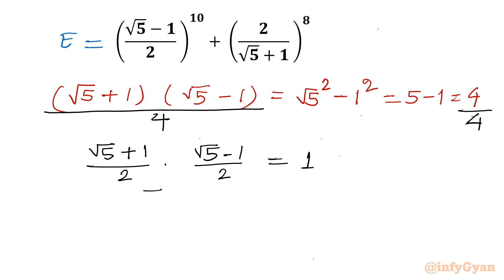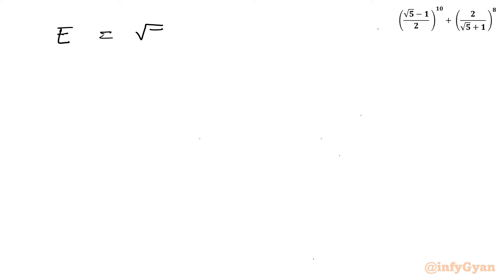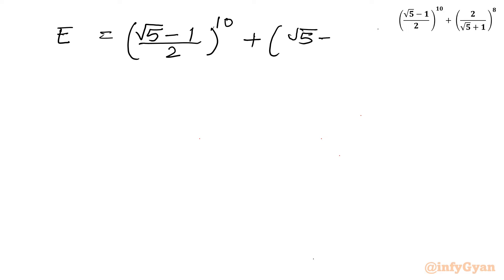Now I can write (√5 - 1)/2, keeping that bracket as is, and take the other to the right-hand side. So I can write 2/(√5 + 1) equals (√5 - 1)/2. Both brackets are actually equal to each other. So I will write E equal to (√5 - 1)/2 whole power 10 plus (√5 - 1)/2 whole power 8.